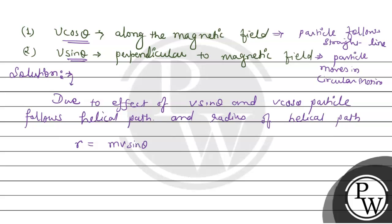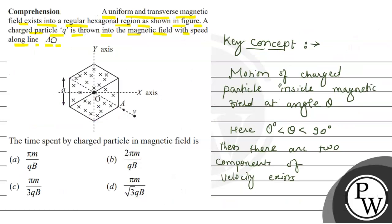And therefore time equals... so sin theta and sin theta cancelled, V also cancelled, we have 2 pi M upon QB. So I think this is the right option. I hope you understood it well. Best of luck, thank you.